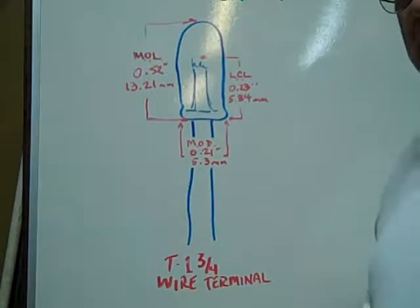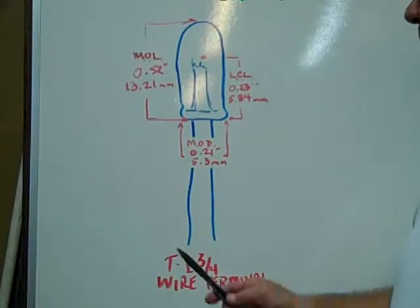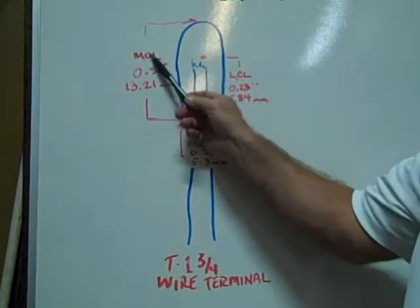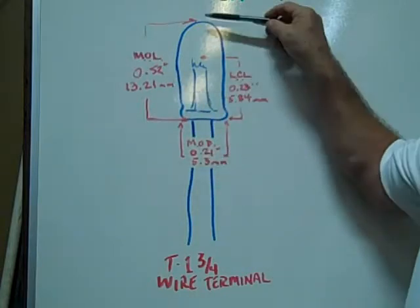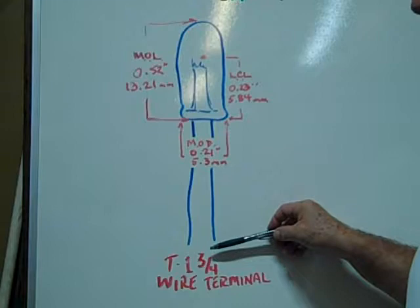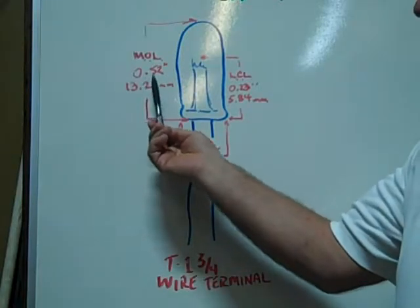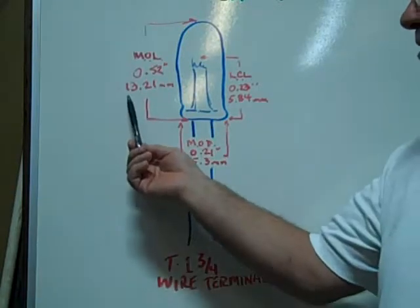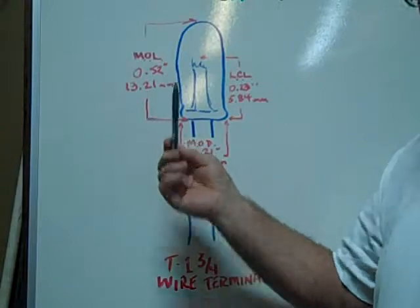The T1-3 quarter wire terminal base bulb has a maximum overall length of just the glass envelope, not including the wire terminals, of 0.52 inches, 13.21 millimeters.